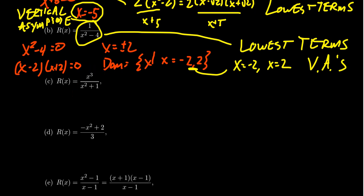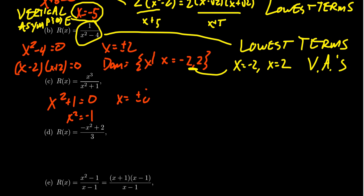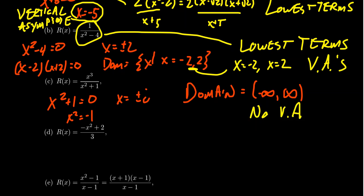For x³ / (x² + 1), to determine the domain we look at the denominator and solve x² + 1 = 0, which gives x² = −1, so x = ±i. By the domain convention, we only consider real numbers, and since the only solutions are imaginary, there is no real number that makes the denominator go to zero. The domain is therefore all real numbers, and there are no vertical asymptotes on this graph.